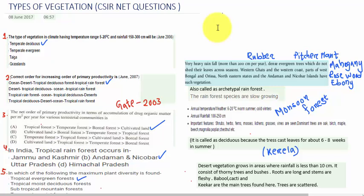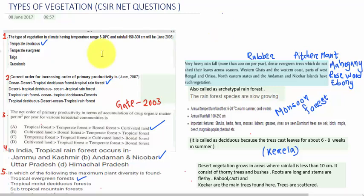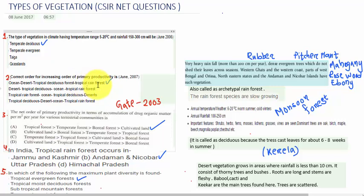The next question is the correct order for increasing primary productivity. The answer is: first the ocean (lowest), then desert, then tropical deciduous forest, and finally tropical rainforest.